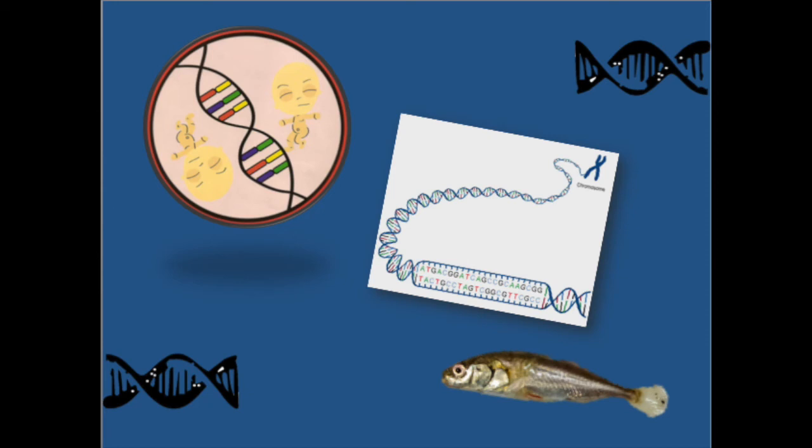These different molecules come together in different combinations to make instructions known as genes. These genes can then tell the body what it needs to do. The gene we're interested in here is known as PITX1, and it's the instructions that tell the body how to make the pelvis.